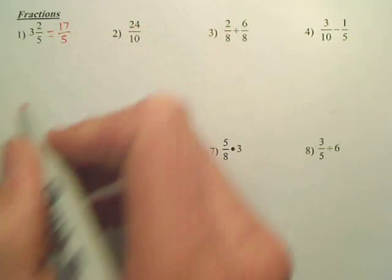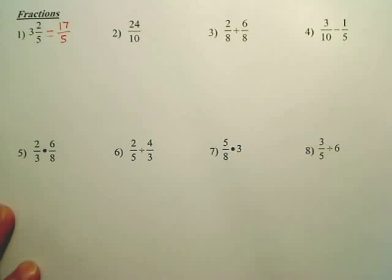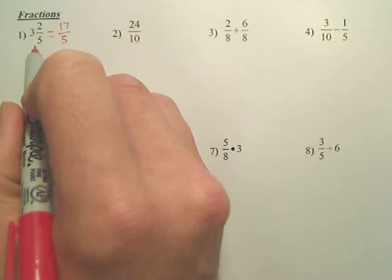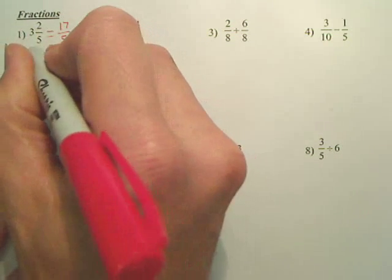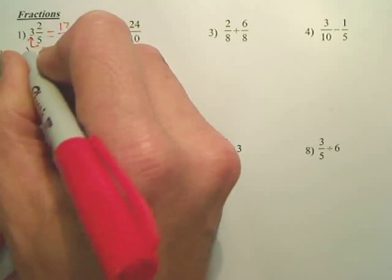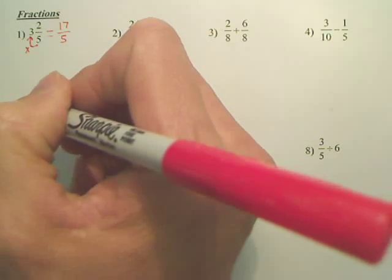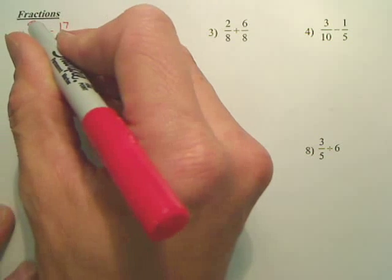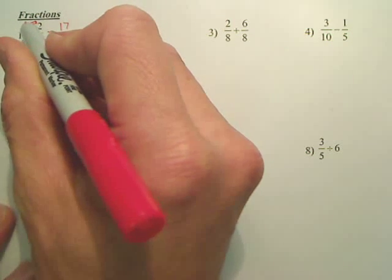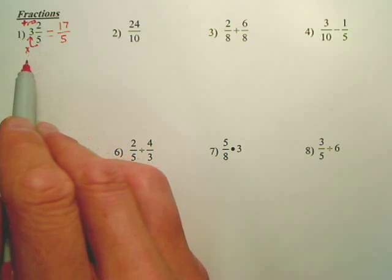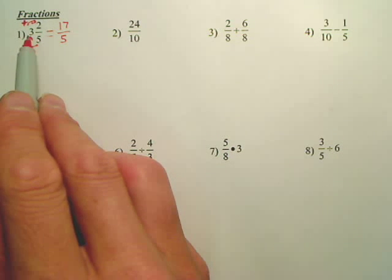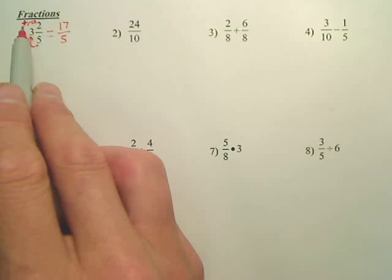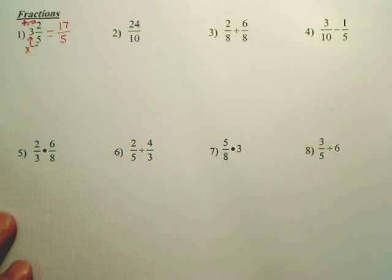And I leave the 5 on top. Now again, I went 5 times 3, and then I take that answer and I add that. So I go 5 times the 3, 15, and then 15 plus 2 in a little loop.